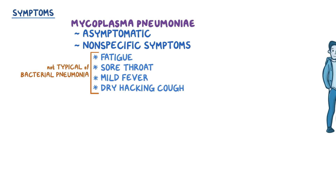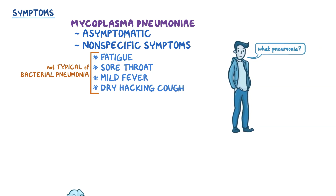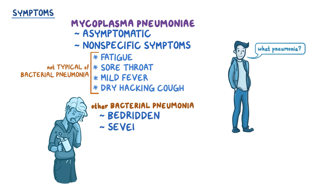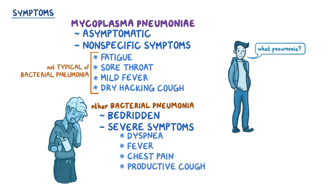Besides, the person might not feel very sick, as opposed to a person suffering from other bacterial pneumoniae, where they'll be surely bedridden and suffering from more severe symptoms like dyspnea or shortness of breath, fever, chest pain, and a productive cough. This is why sometimes a case of atypical pneumonia is also referred to as walking pneumonia.